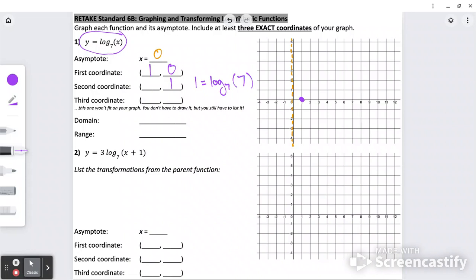So that means the x value is seven. Let's try two for the y. So this is saying seven to the two gives you what? Well, seven to the two gives you 49. So the x is 49. So we can draw (7, 1), the other one won't fit.